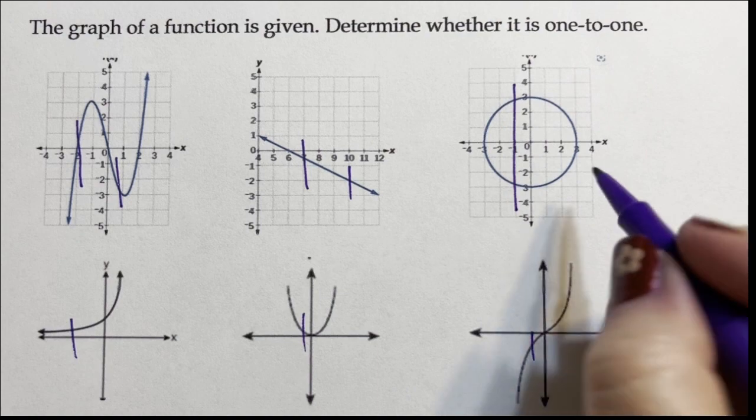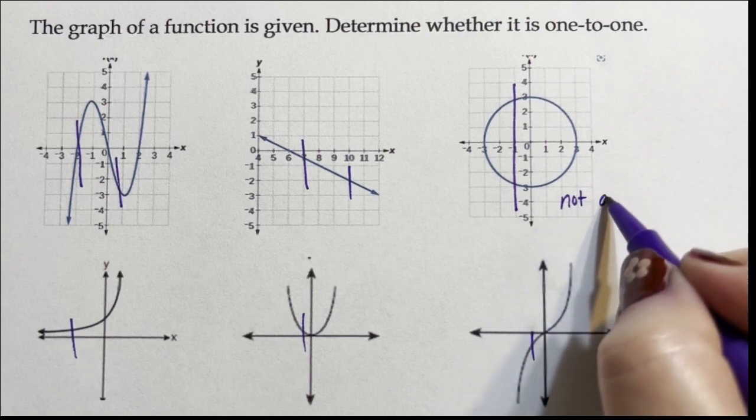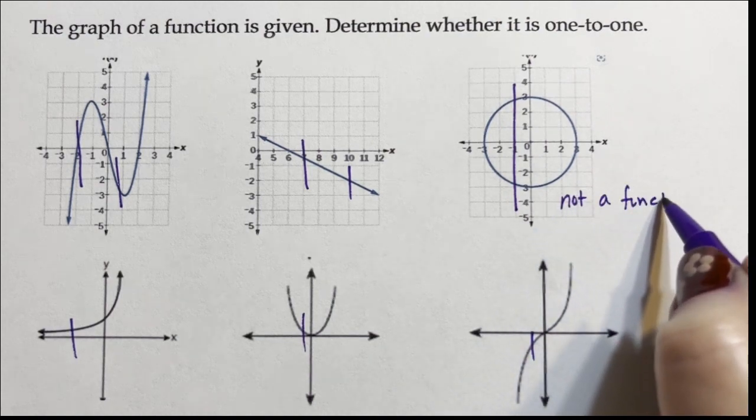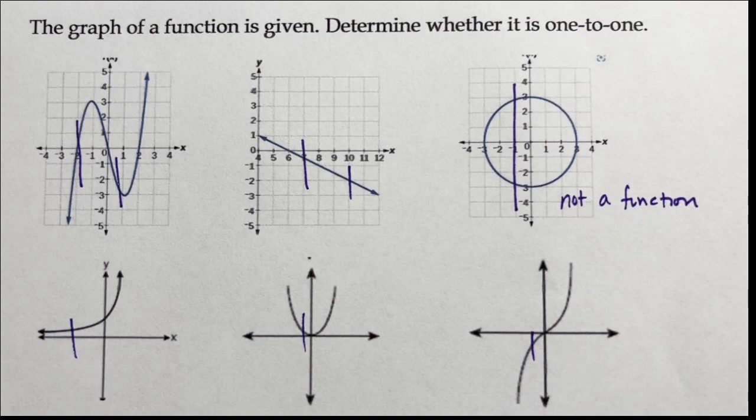All but one of these pass, so this is not a function. All right, so one of these does not pass the vertical line test.